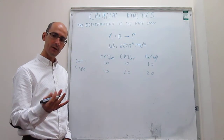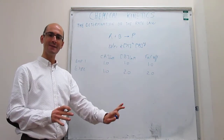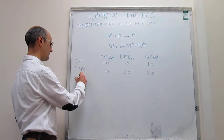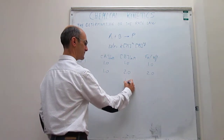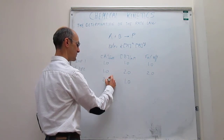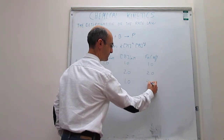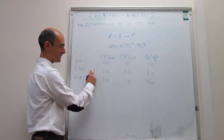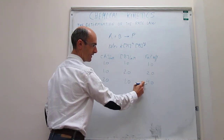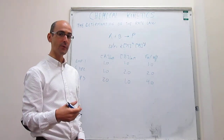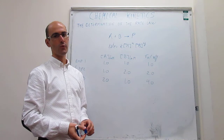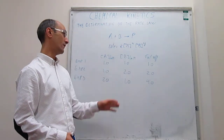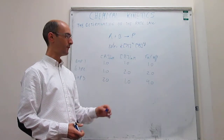Now what we need is another experiment in which we isolate the dependence of the rate on the concentration of A by holding fixed the concentration of B. In the third set of experiments, we hold fixed the concentration of B and vary the concentration of A, then measure the rate. Notice that if you compare experiment 3 with experiment 1, the only thing changing is the concentration of A, so the change in the rate only comes from the dependence of the rate on [A], which is just that reaction order X. So the question is how do we find the exact numbers of X and Y, and finally the rate constant?